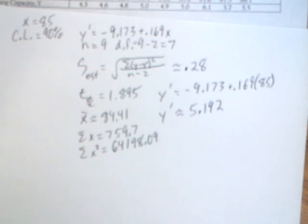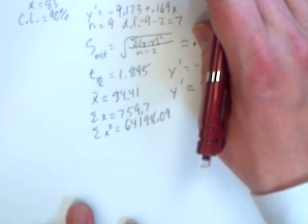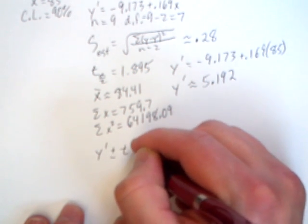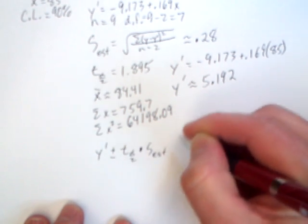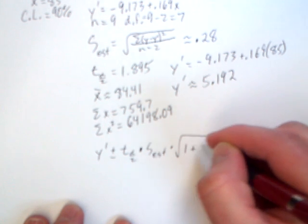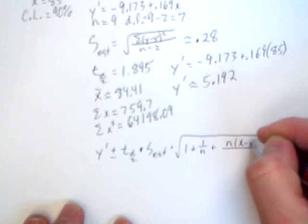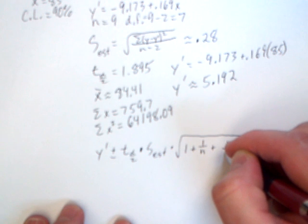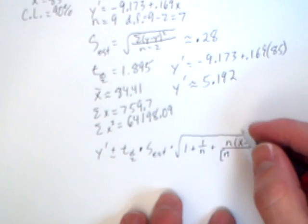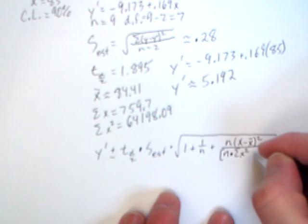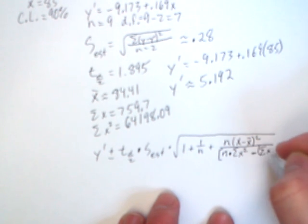We now have everything that we need to go into our formula, and that formula is Y prime plus or minus the T sub alpha over two times the standard error of the estimate times the square root of 1 plus 1 over N plus the fraction of N times X minus X bar quantity squared over N. Now let's use a left parenthesis here, N times the summation of X squared minus the summation of X, that value is squared, and then a right parenthesis.